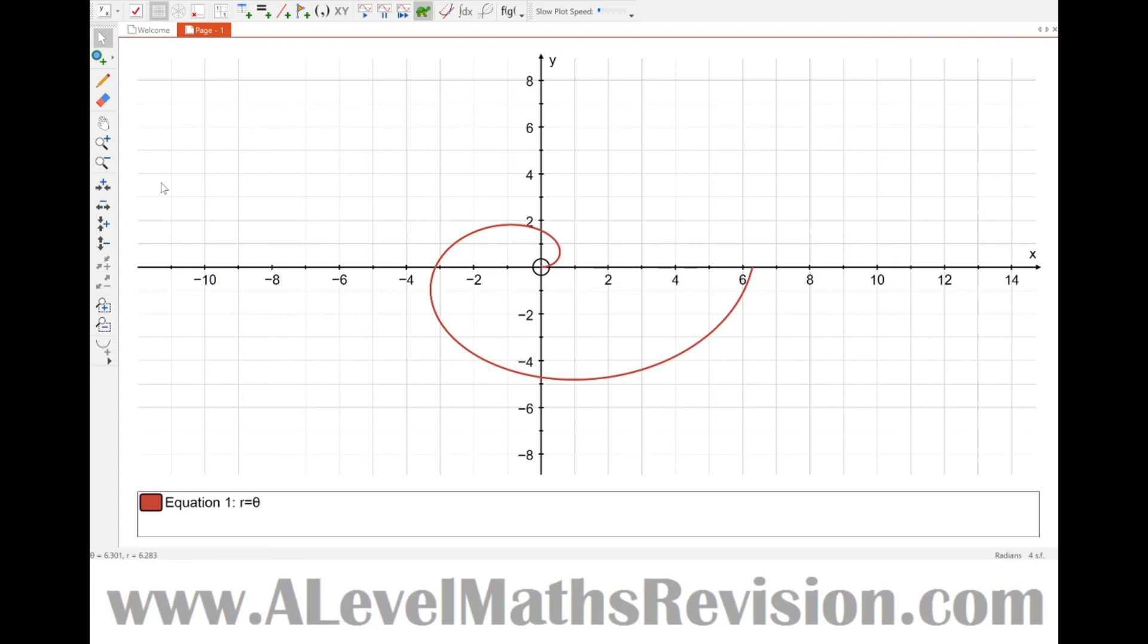So all the way from 0 to 2 pi, and 2 pi is 6.28 approximately. You can see that's the distance from the origin where the curve stops.